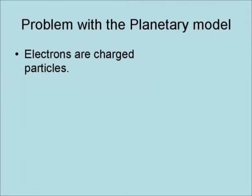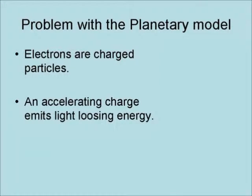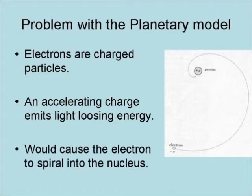The problem with the planetary model is that electrons are charged particles, and an accelerating charge emits light, losing energy. This would cause the electrons to spiral into the nucleus.